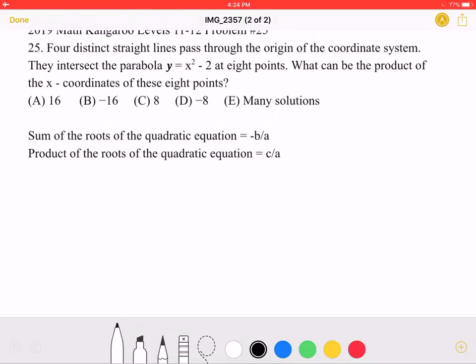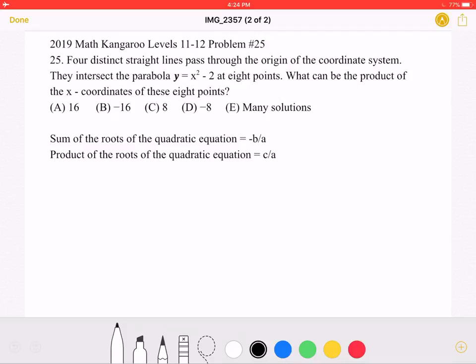And here is where we'll be doing the solution. To start, we have the parabola as stated in the problem, y equals x squared minus 2.